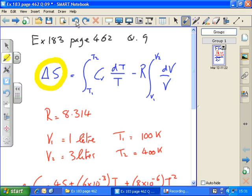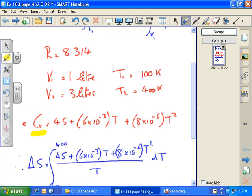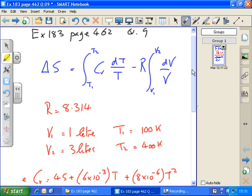Change in entropy delta S is given by the integral of Cv, where Cv is some coefficient to do with the particular gas and the value for Cv depends on the temperature and it's given by this expression below here, multiplied by or divided by T, times DT over T. In other words, it's an inverse temperature relationship. Minus R, integral between V1 and V2 of DV over V.